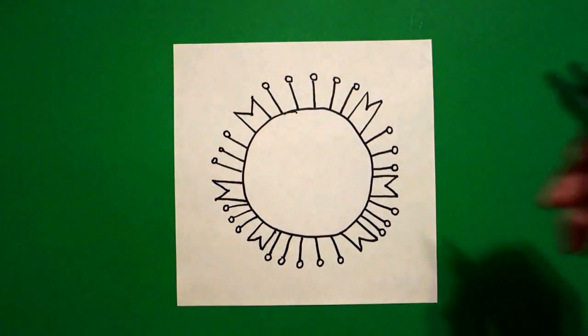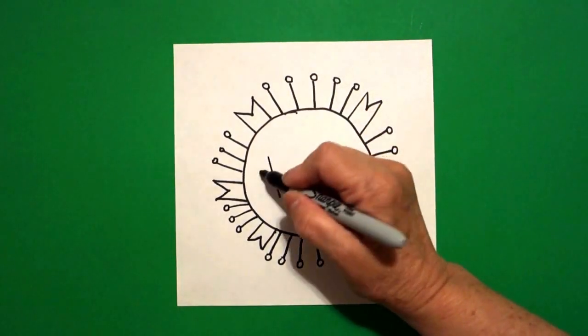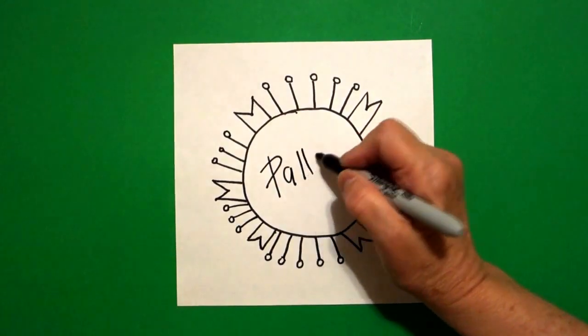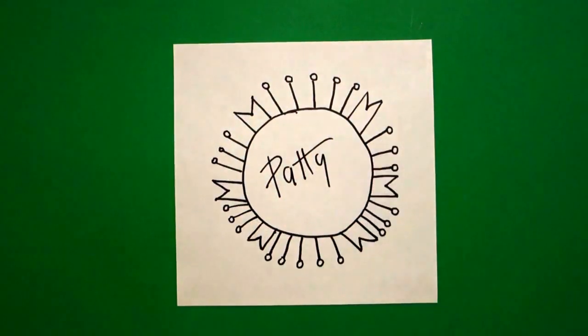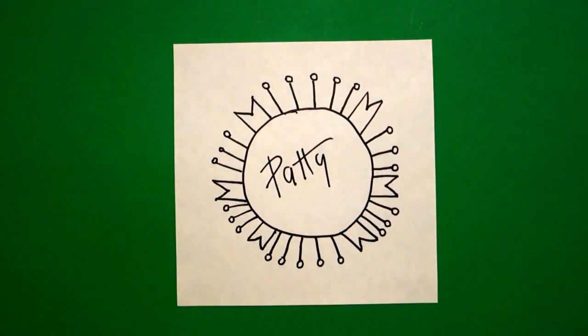Once you've done that, you come in and you can write your name. Now I made this one pretty big so that you could see how to draw it, but if you're making it for a name tag, you might want to make it smaller. Alright, let's see how we're going to color this in.